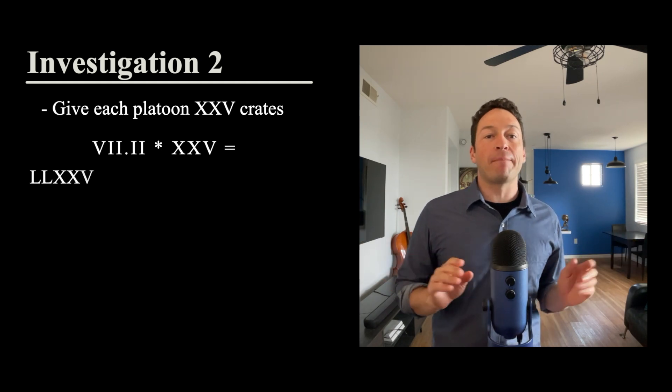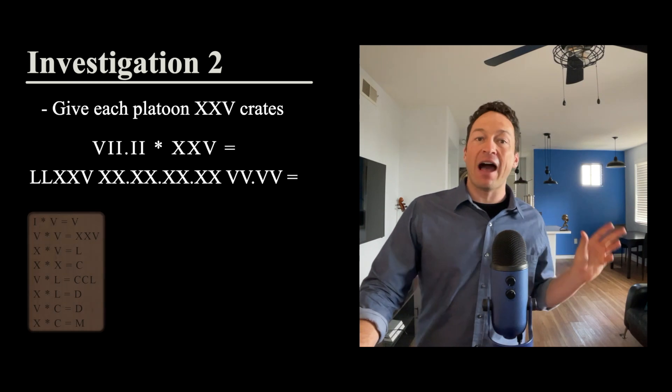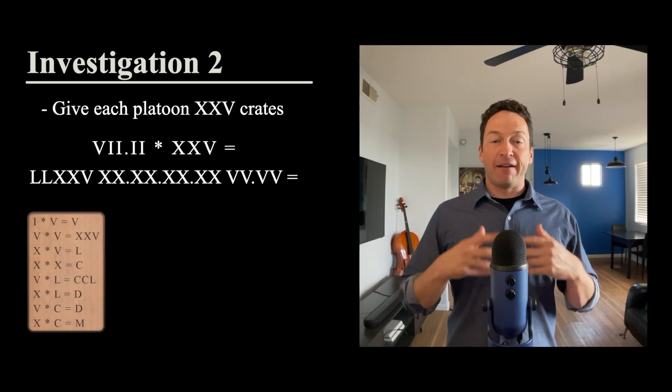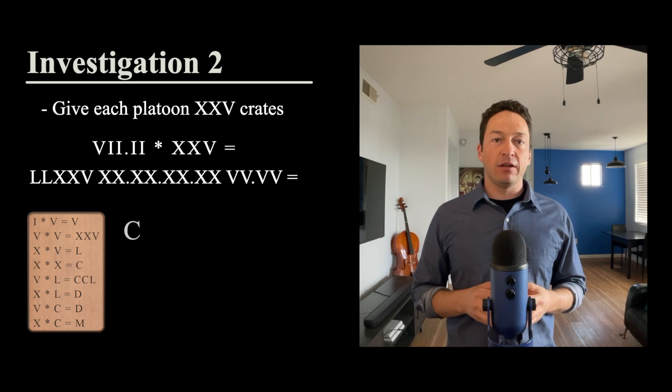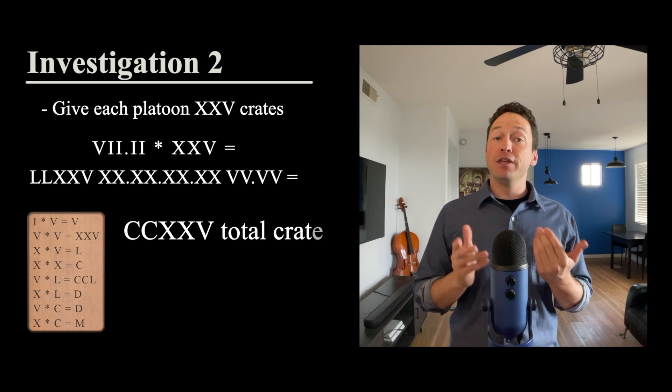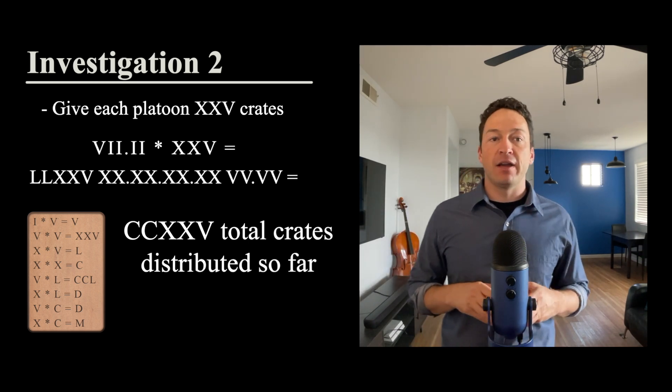If you want to work out that process, I've shown it on the board and you can pause the video to follow how that was done. He uses the Roman multiplication tables. At the end, after he condenses all these symbols together, he gets 200, 210, and five. He has distributed this many crates if he gives each platoon 210 and five crates.